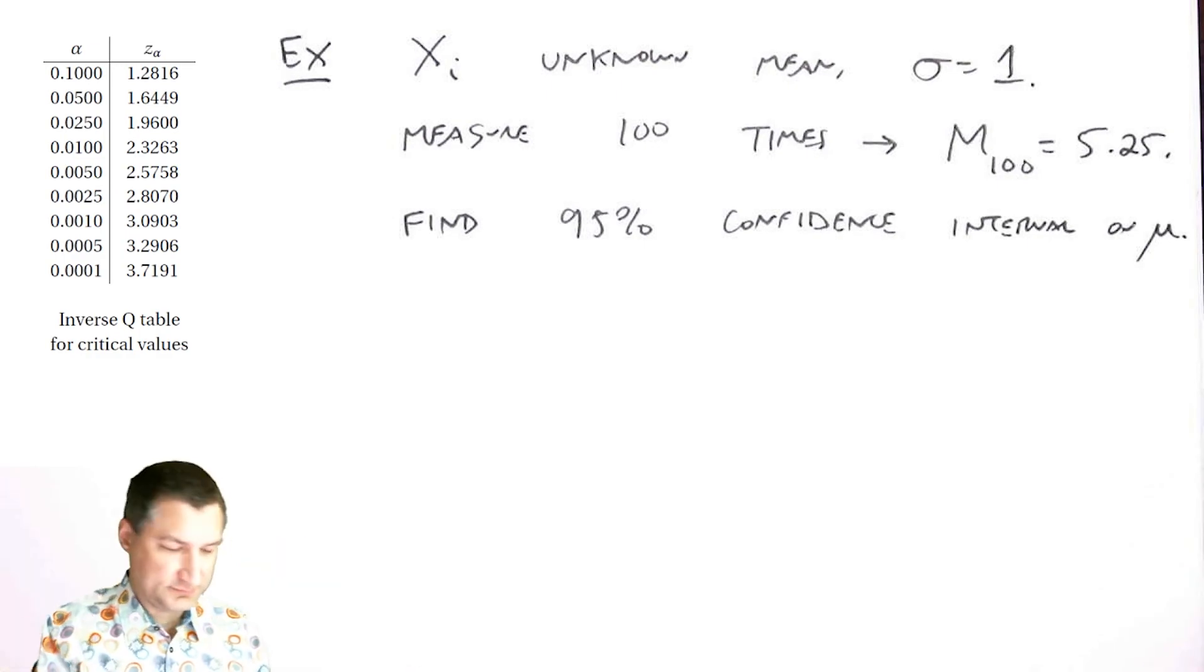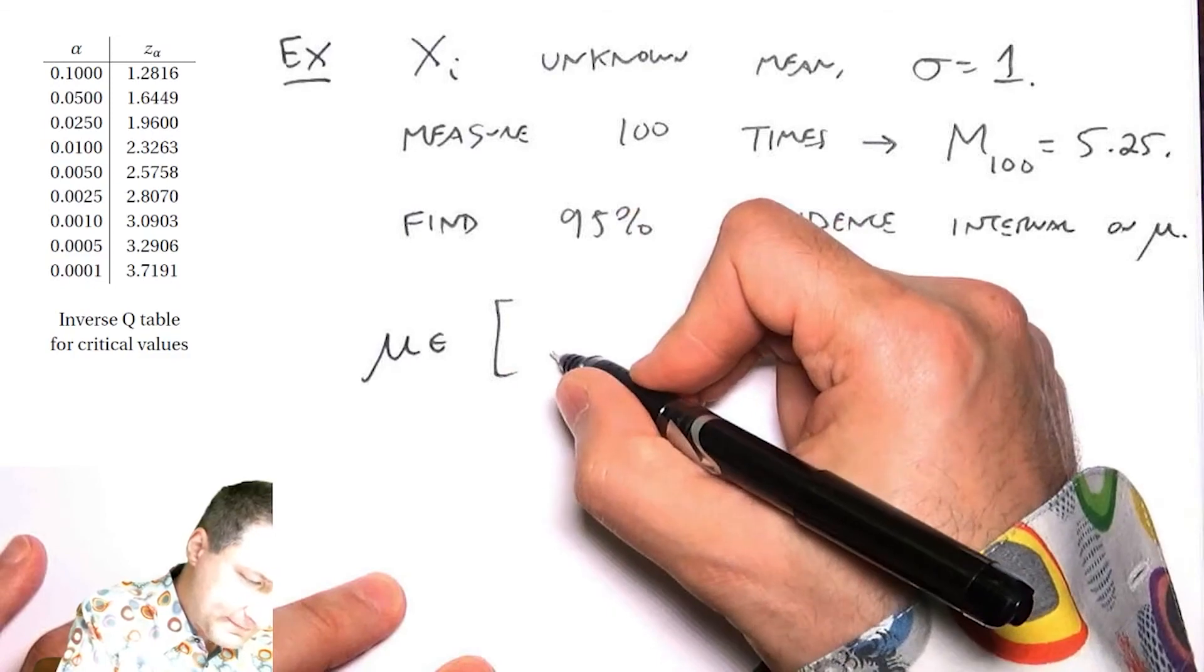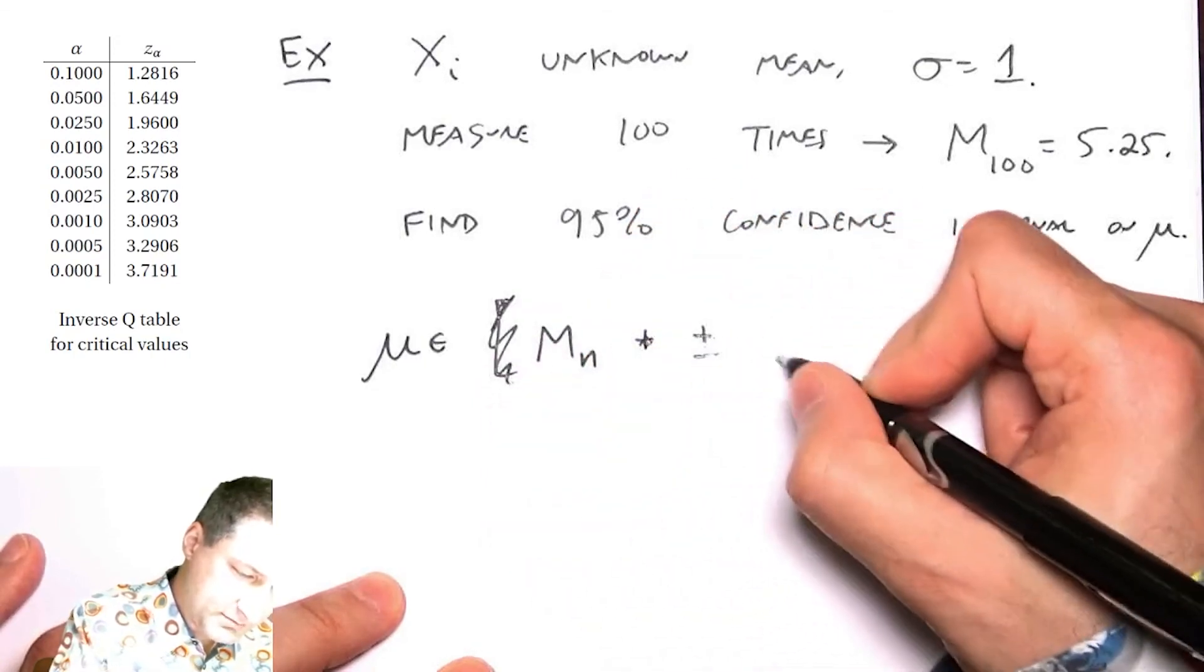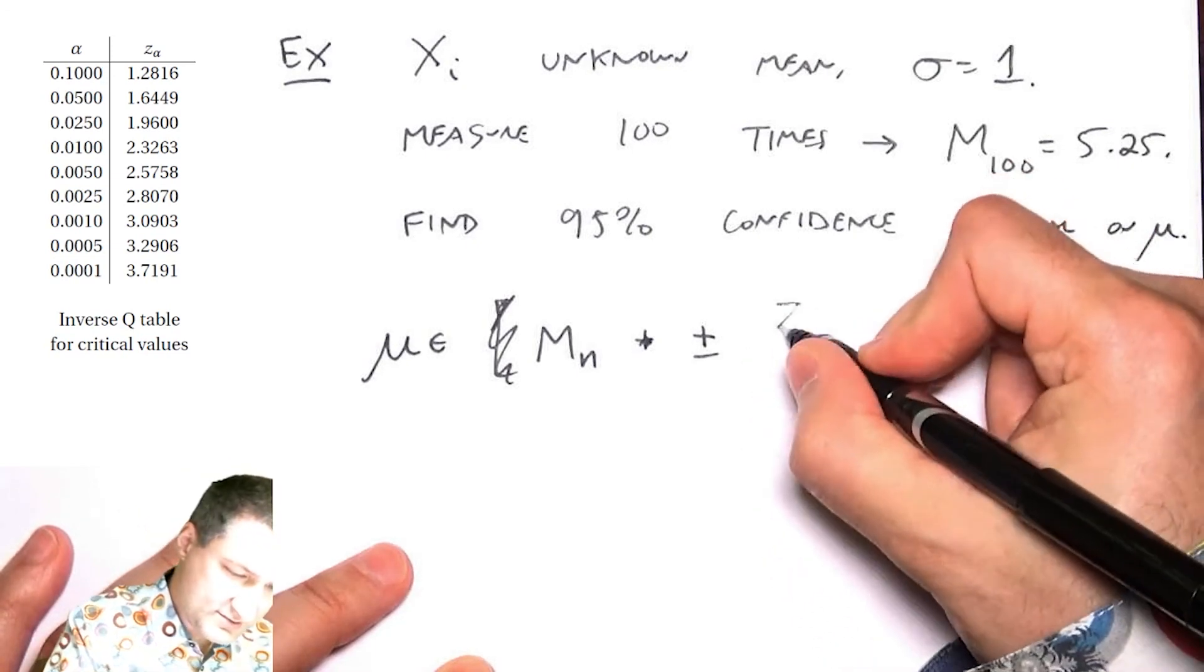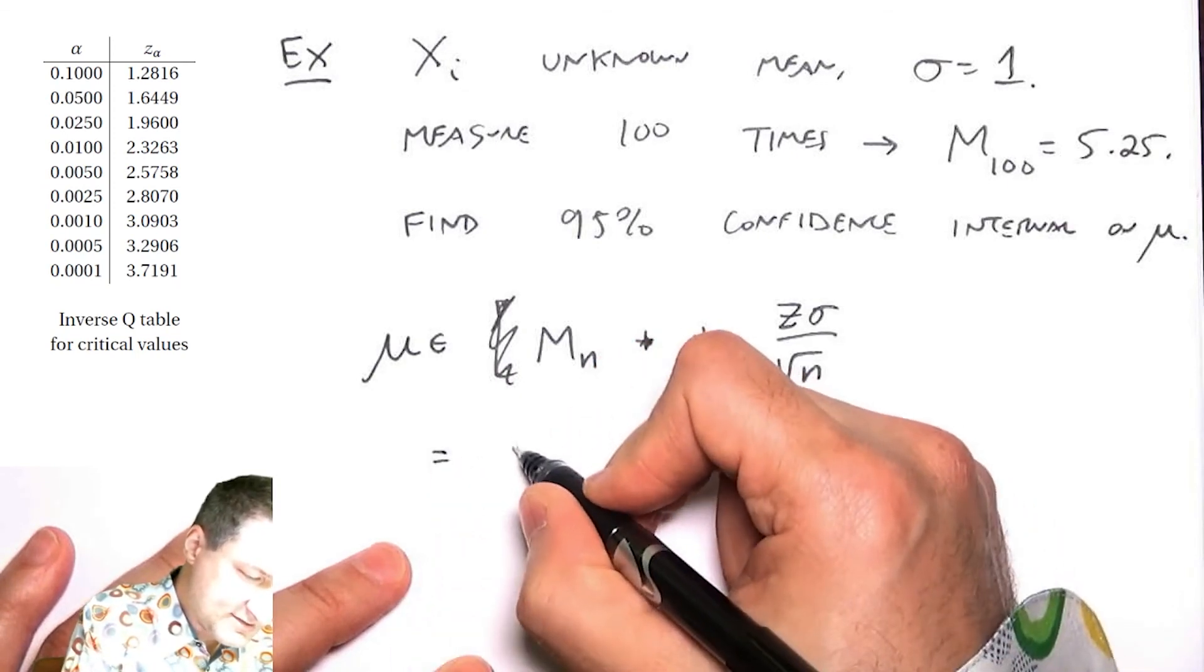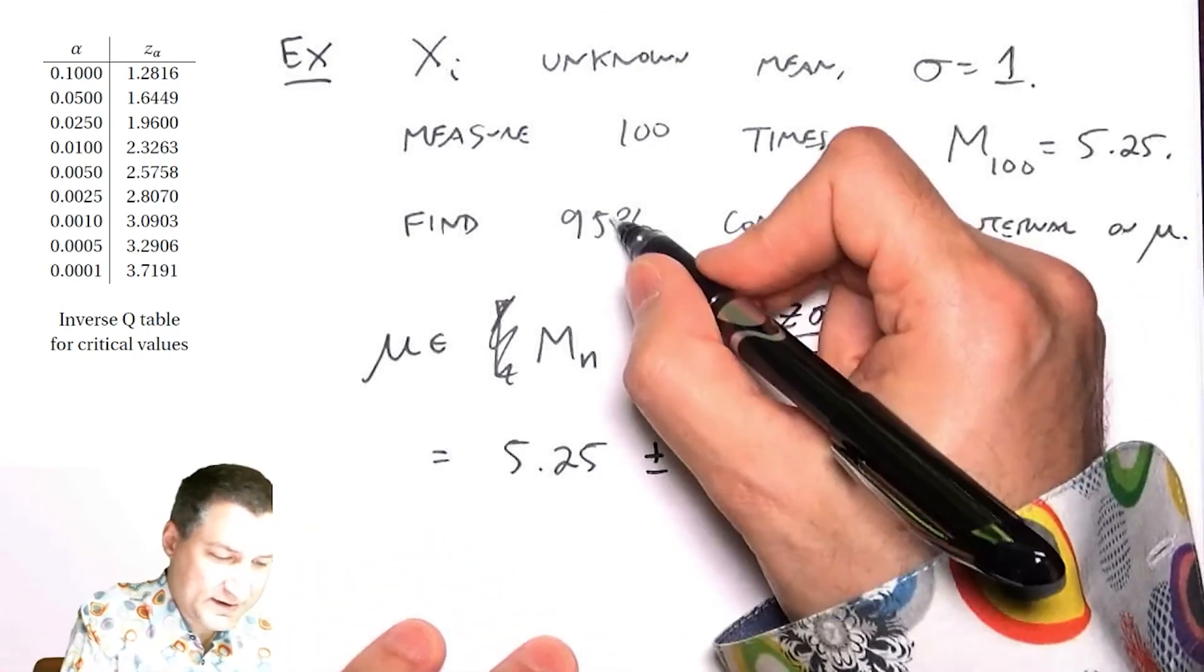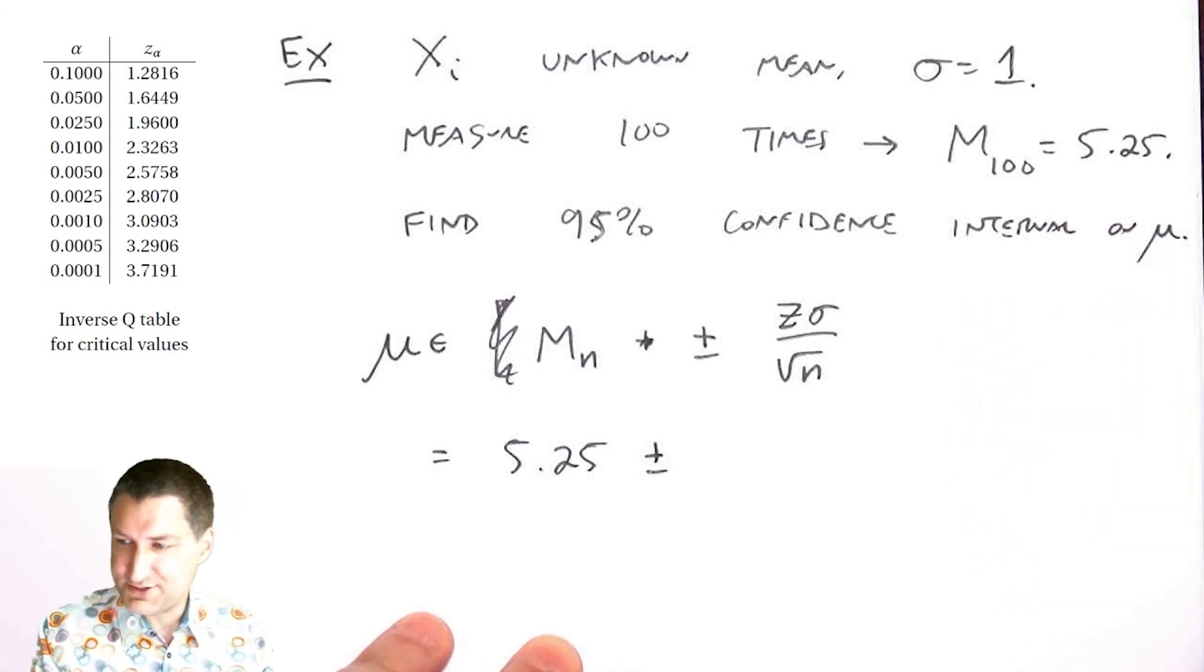My μ is going to be Mₙ ± z·σ/√n. This is 5.25 ± ... what is my z? For a 95% confidence interval, I need exactly the number from the previous page. My z is z_{0.025} = 1.96.